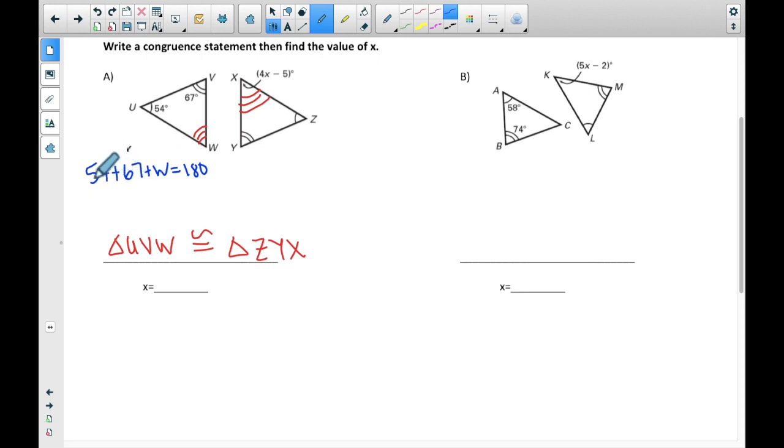So now if I add my like terms, 54 plus 67 makes 121. So now if I subtract 121, and I've run out of space, I'm going to come over here. What I get is W is equal to 59 degrees.